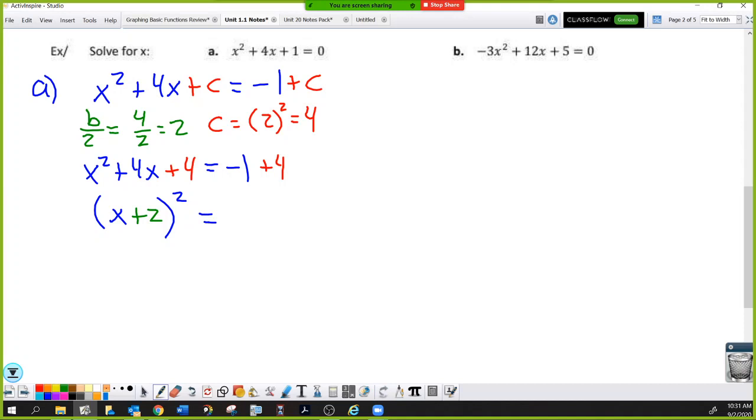Every single time. And on the right side, negative 1 plus 4 is 3. And now we just solve using the square root bar, just like we did in the first two examples, to isolate x. So we'll take the square root of both sides.